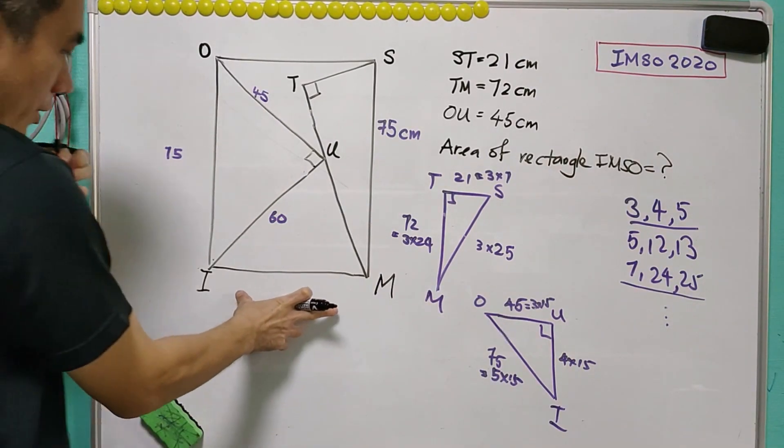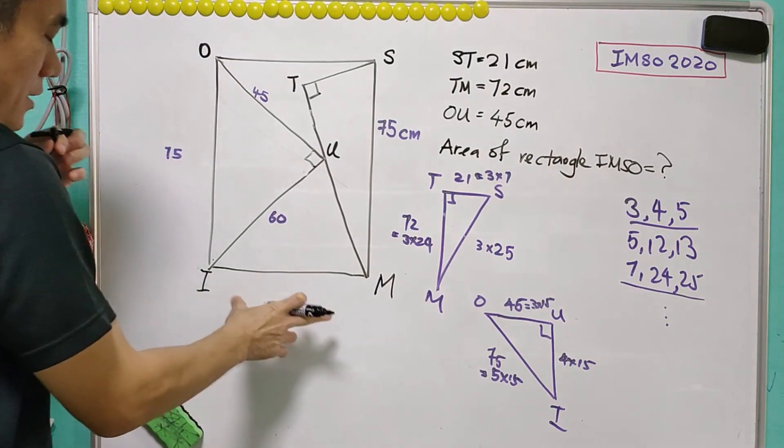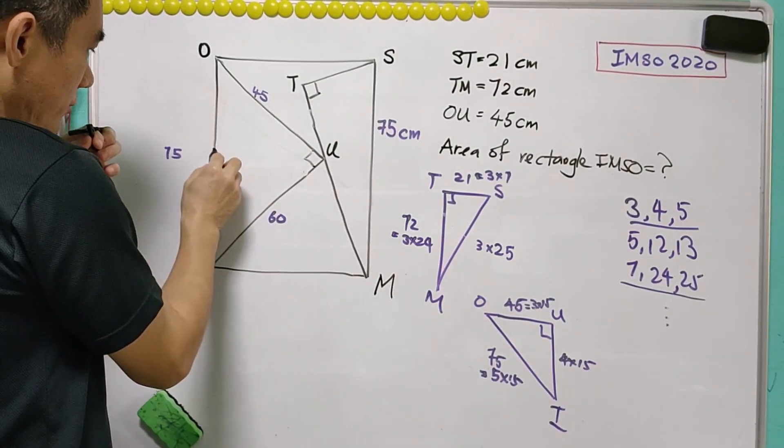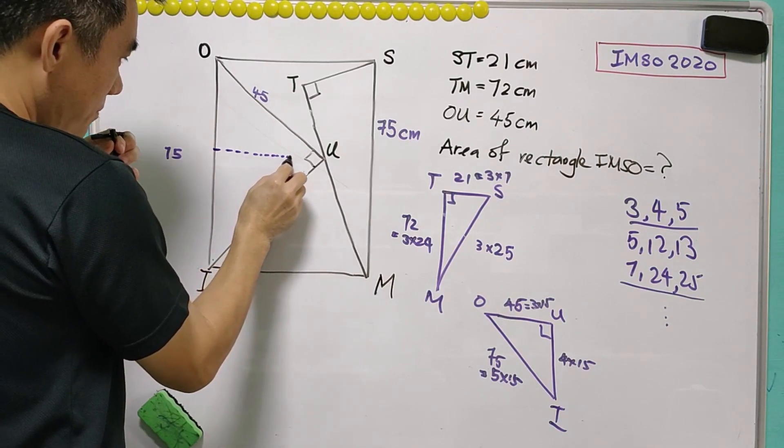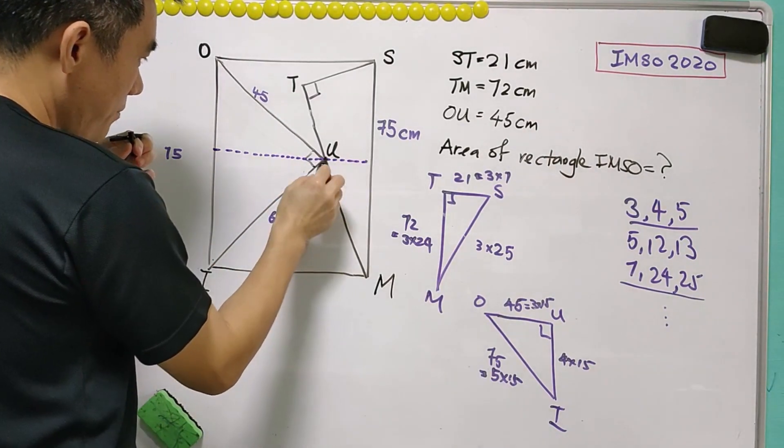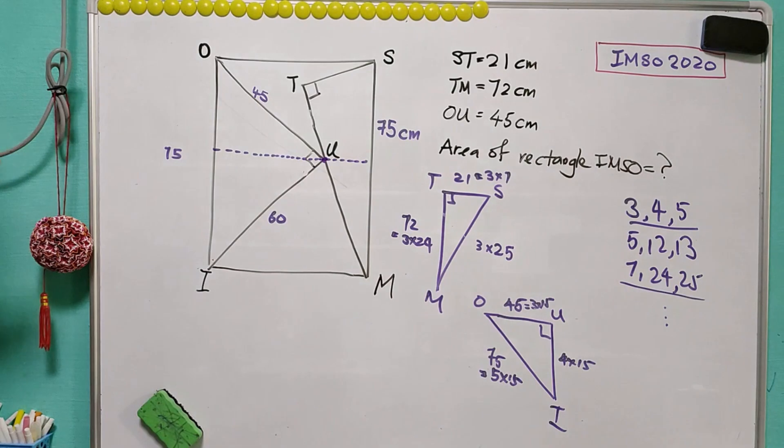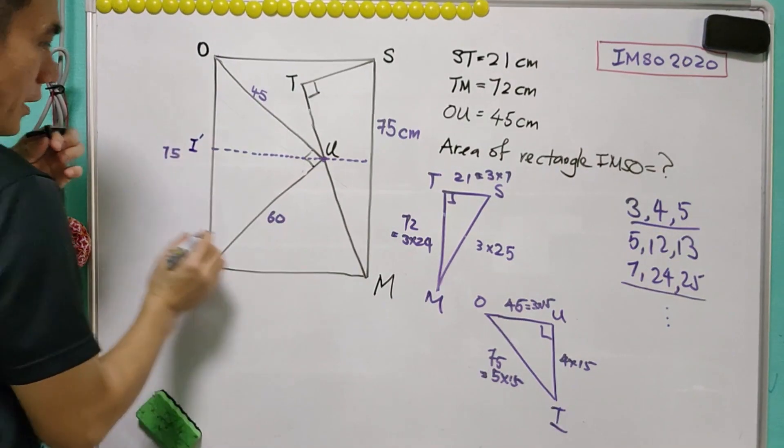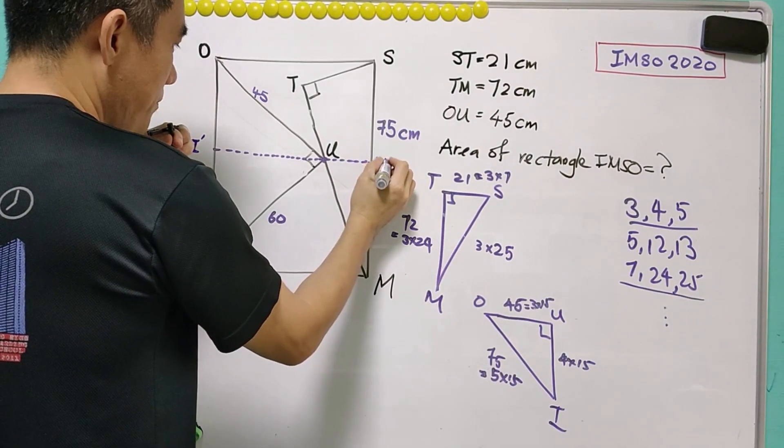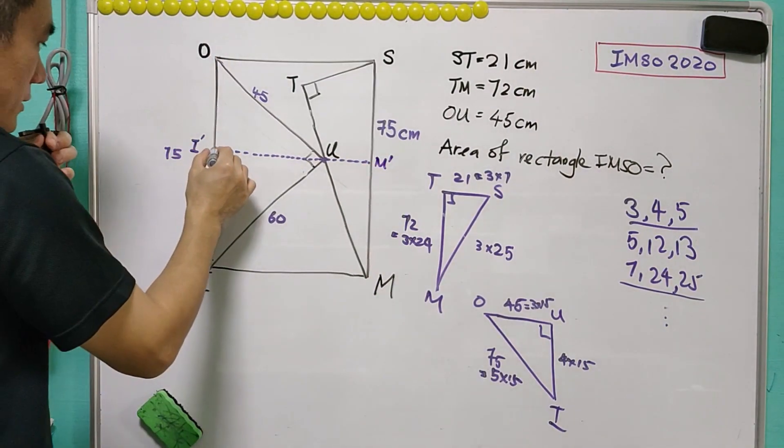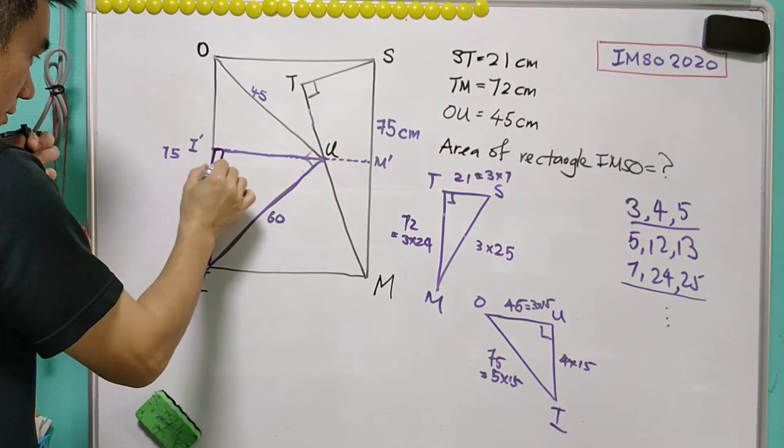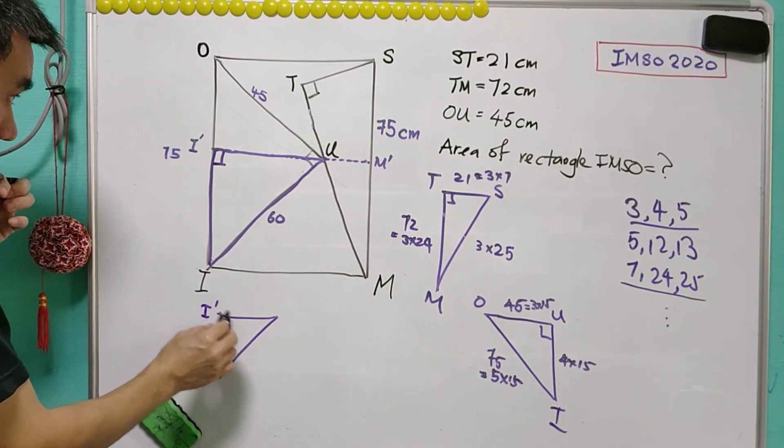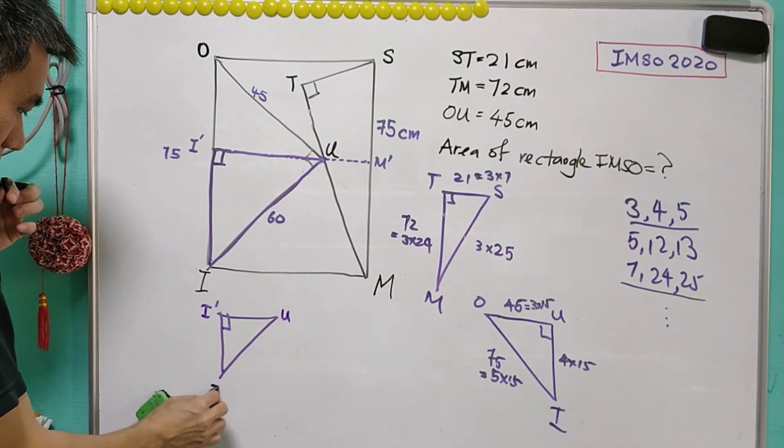As I mentioned, we still need to find the value of IM. In order to get IM, we can construct a new line that is parallel to IM and passes through point U. Call this point I' and this point M'. We will focus on this triangle now, triangle I'UI.